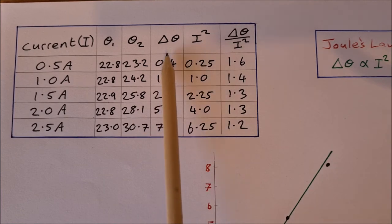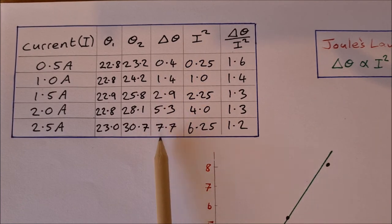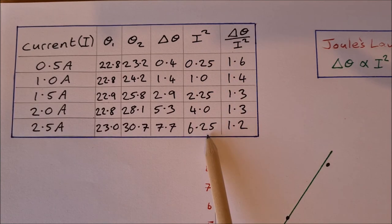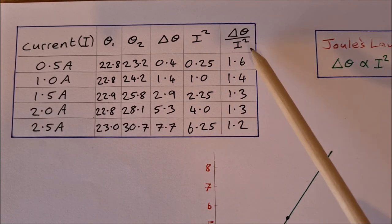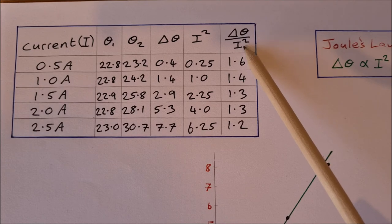This column is the important one. That's delta theta, the change in temperature. This one then we have I squared, that's the current squared. And then the last one, delta theta over I squared.